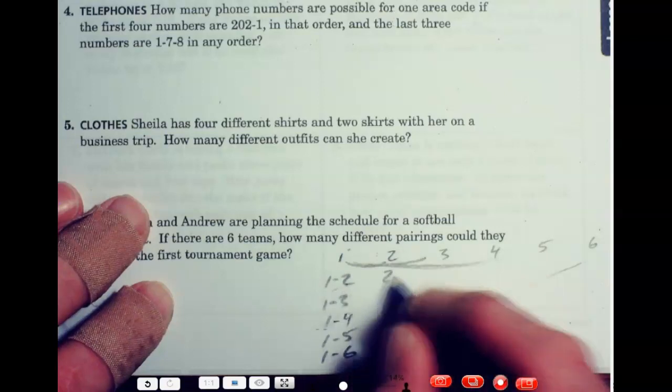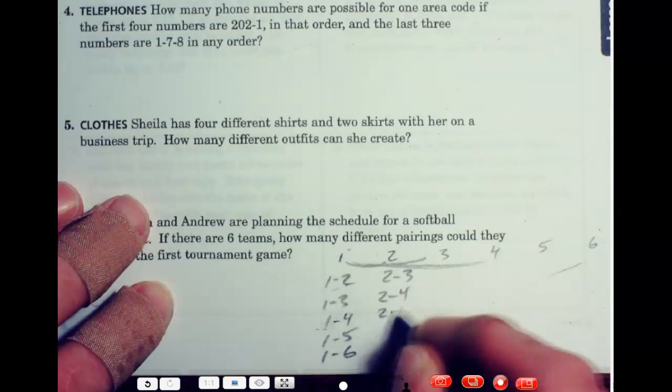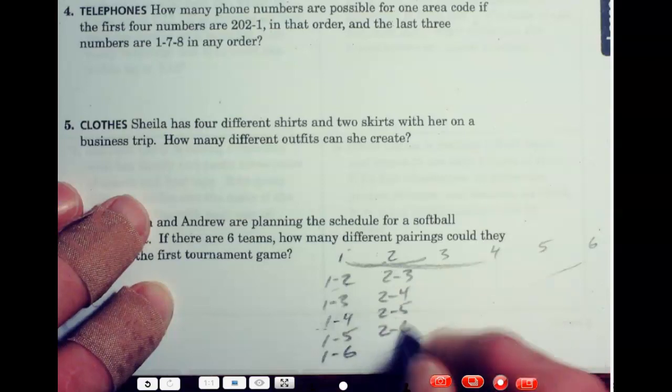So, two could play three. Two could play four. Two could play five. Two could play six. See how it's getting shorter?